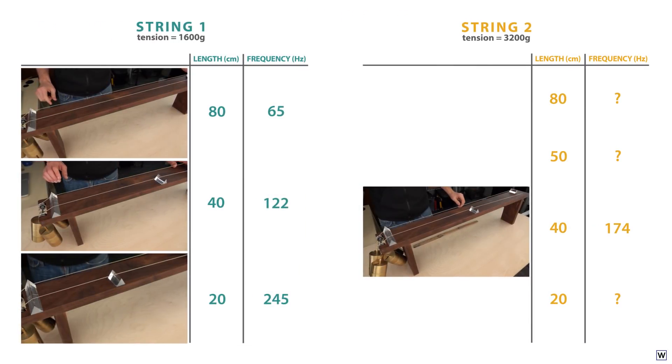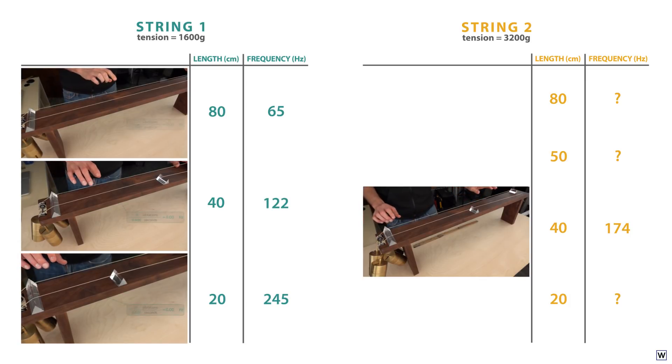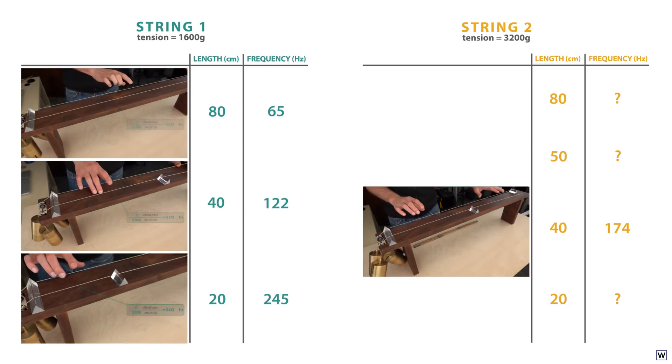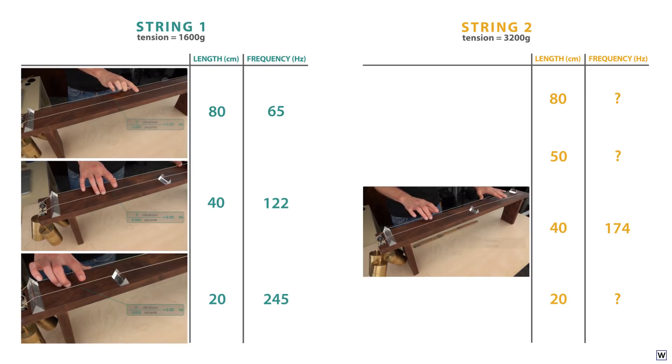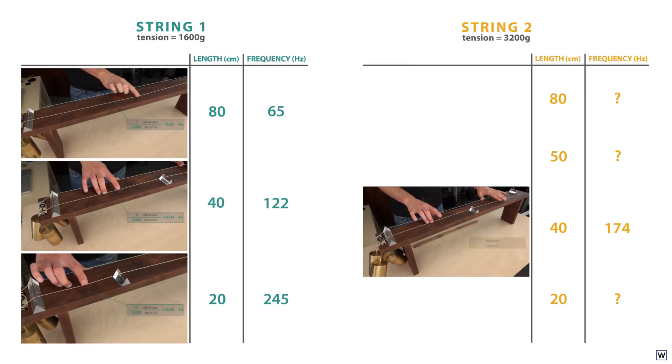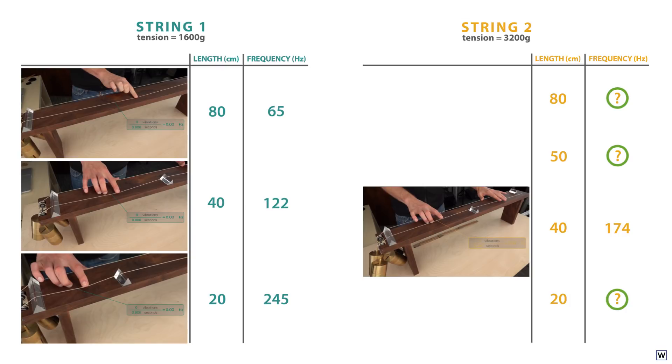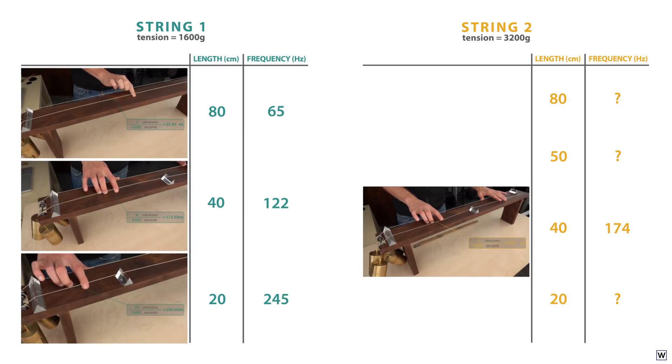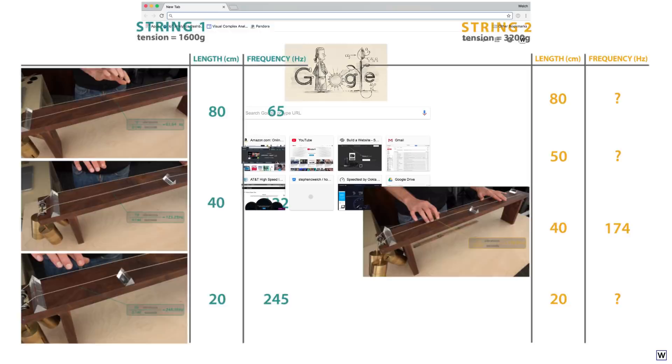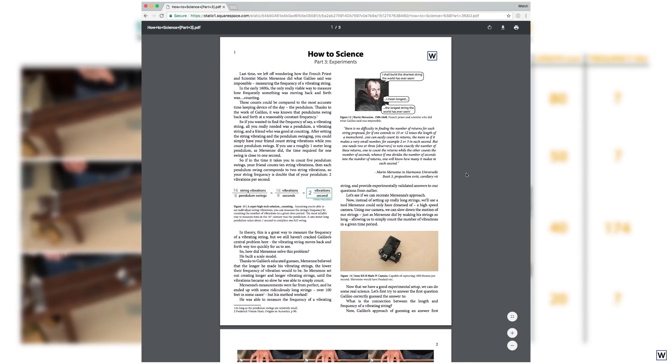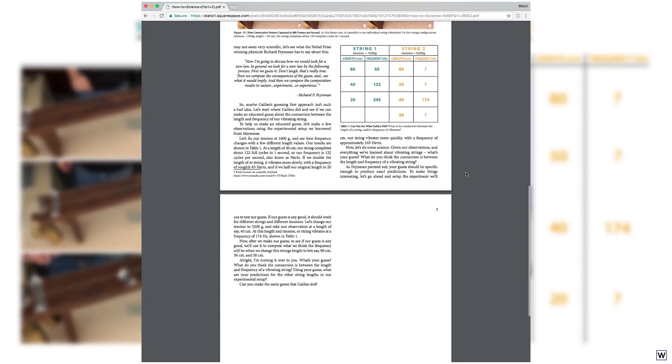Alright, I'm turning it over to you. What's your guess? What do you think the connection is between the length and frequency of a vibrating string? Using your guess, what are your predictions for the other string lengths in our experimental setup? Can you make the same guess that Galileo did? For a closer look at our data, check out the PDF linked below. Good luck, and thanks for watching.